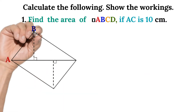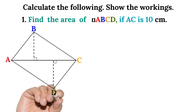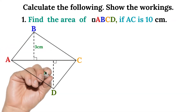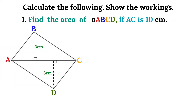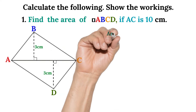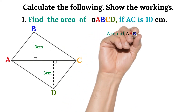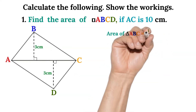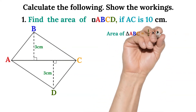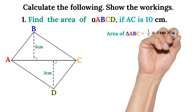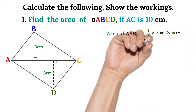We're going to calculate the area of this rectangle, but this rectangle is made up of two triangles. So we are going to look at the triangles first — we will calculate the triangles in separate parts. Let's look at the first triangle: area of triangle ABC is equal to one half times three centimeters times ten centimeters.